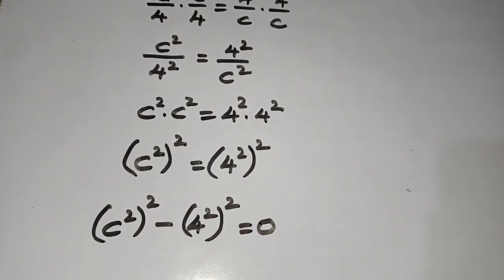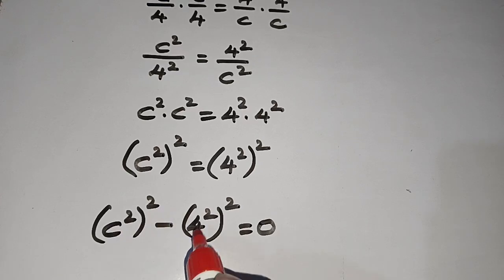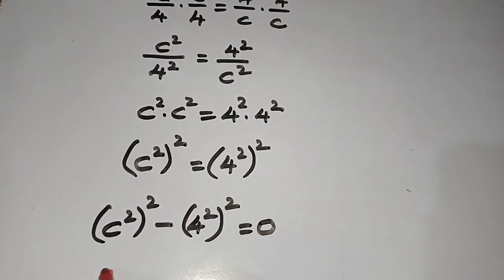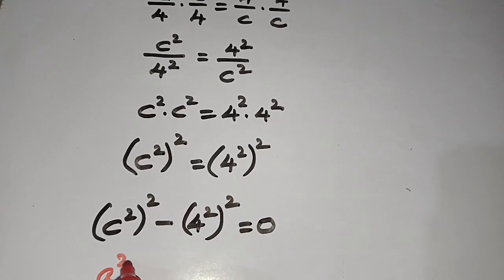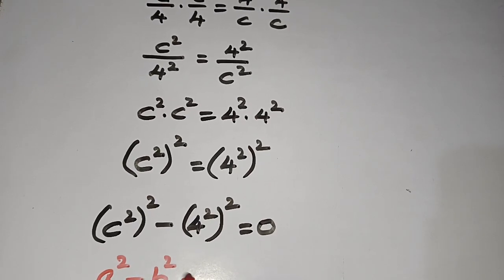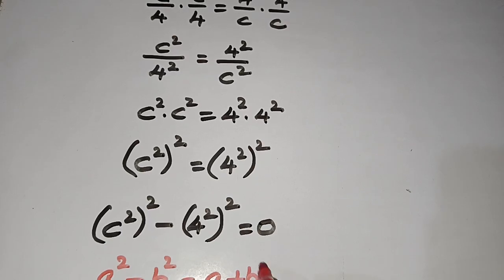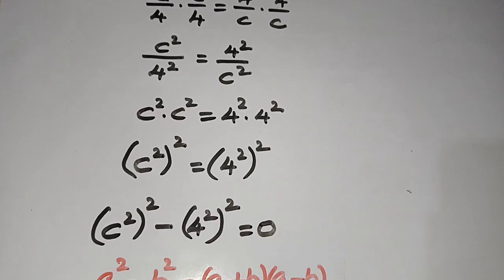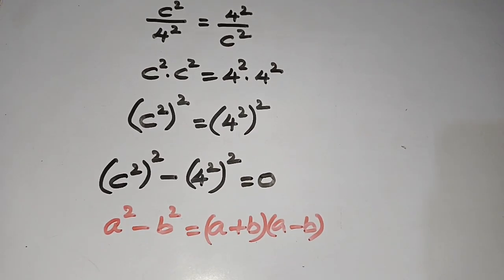Here (c²)² minus (4²)² is of the type a² minus b², which is equal to (a+b)(a-b). This is the famous algebraic identity.